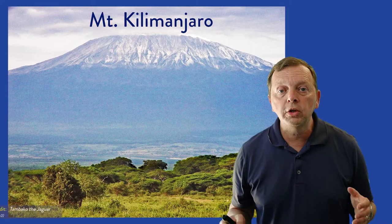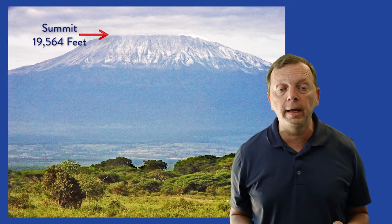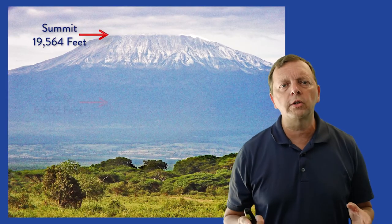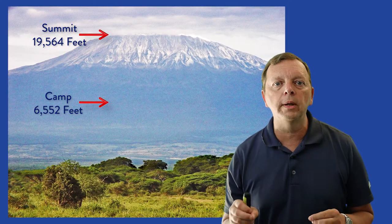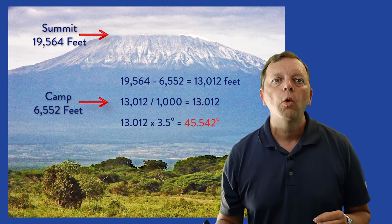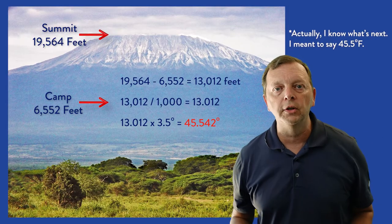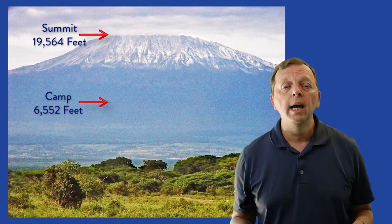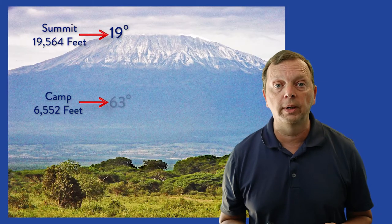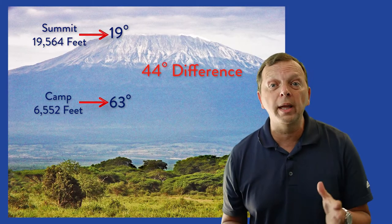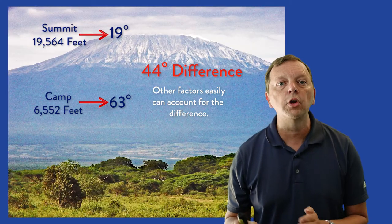Take Africa's tallest mountain, Mount Kilimanjaro, which is found in the country of Tanzania. It towers over the African savannah at 19,564 feet. If you're climbing Mount Kilimanjaro, you're probably going to stop at one of the camps at the foot of the mountain that sits at over 6,500 feet. Using our 3.5 degree temperature per every 1,000 feet of elevation calculation, we could tell you that the summit of Mount Kilimanjaro should be 44 degrees colder than at this camp. And indeed, on the 24th of July, the temperature at the top was 19 degrees and the camp at 6,500 feet was 63 degrees — a difference of 44 degrees, only about 1.5 degrees off of our calculation.